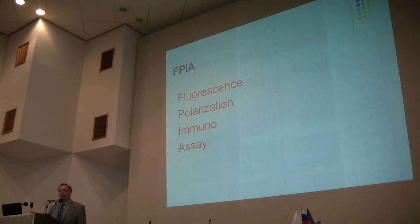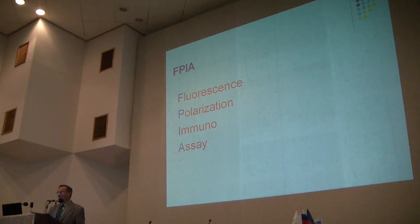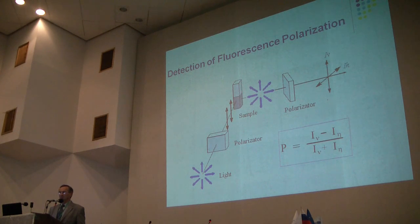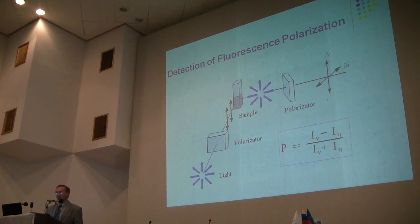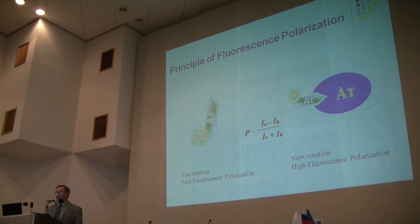From my point of view, one of the more prospective techniques for high-throughput screening is fluorescence polarization immunoassay. Briefly, this method uses a special analytical signal — fluorescence polarization. We need two polarizers to detect two components of fluorescence, such as vertical, and can calculate the fluorescence polarization.